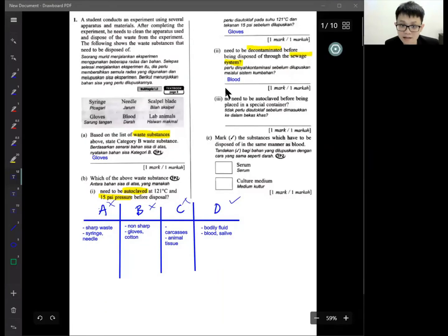The answer is blood. Let's move on to the next question: no need to be autoclaved before placed in the special container. Means we no need to clean it, which one you think no need to be clean before we throw it? So the answer will be A, syringe and needle.